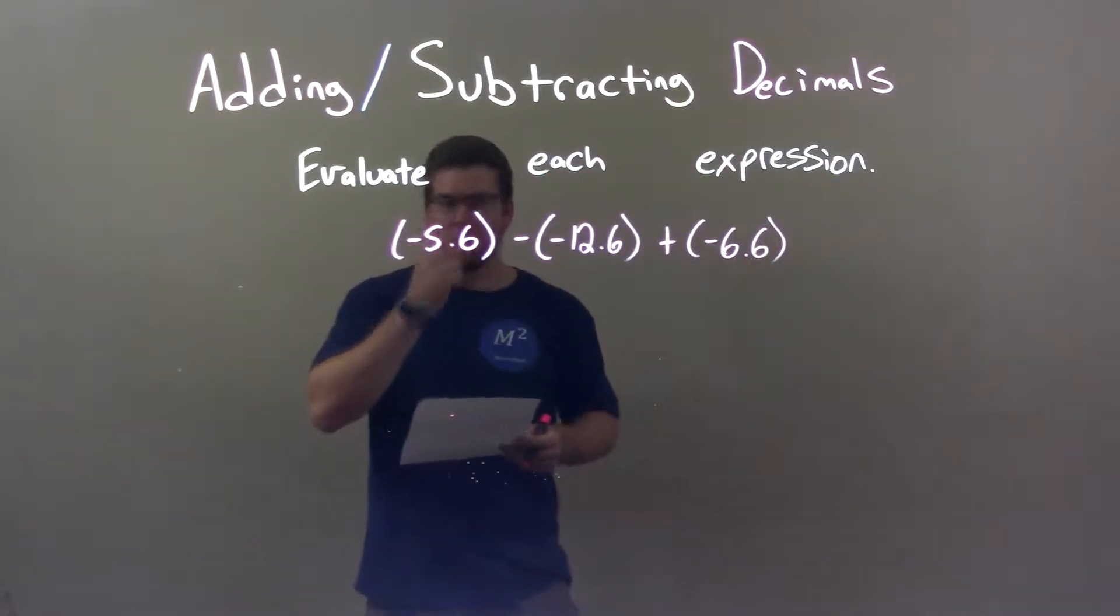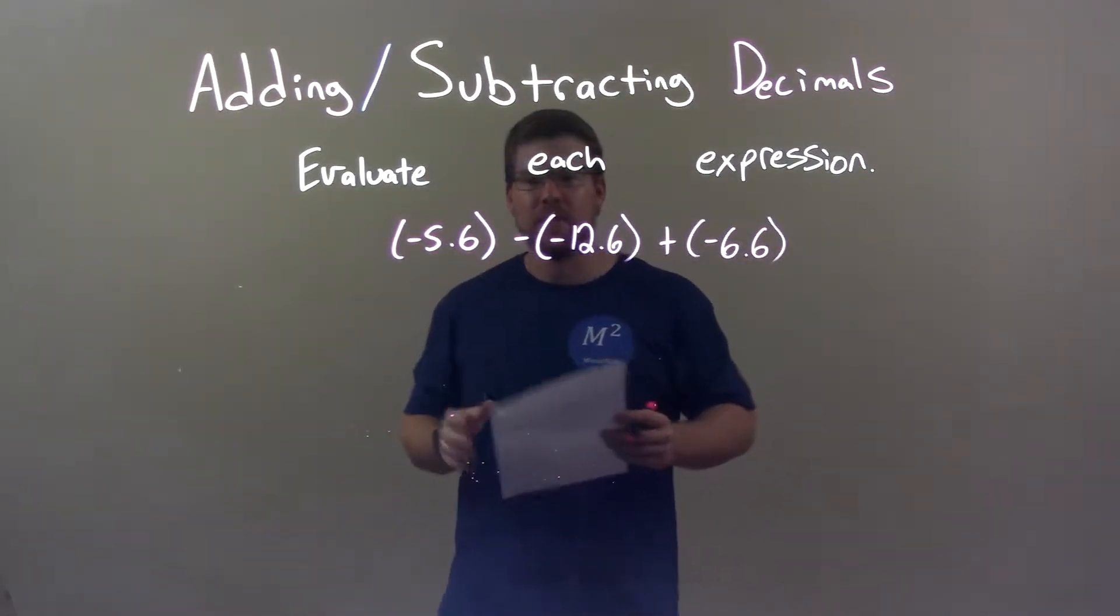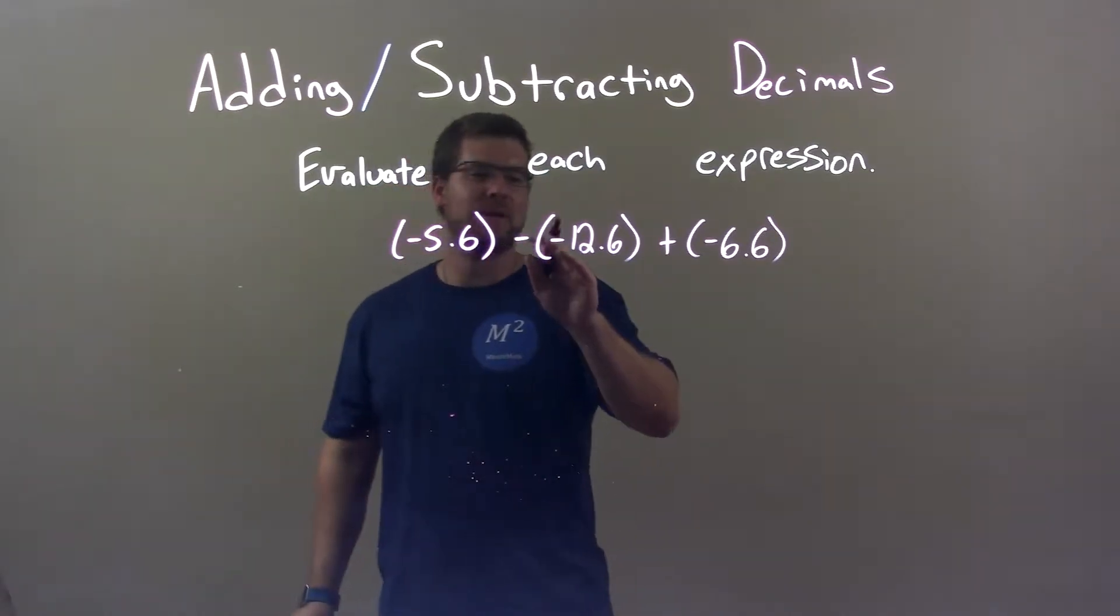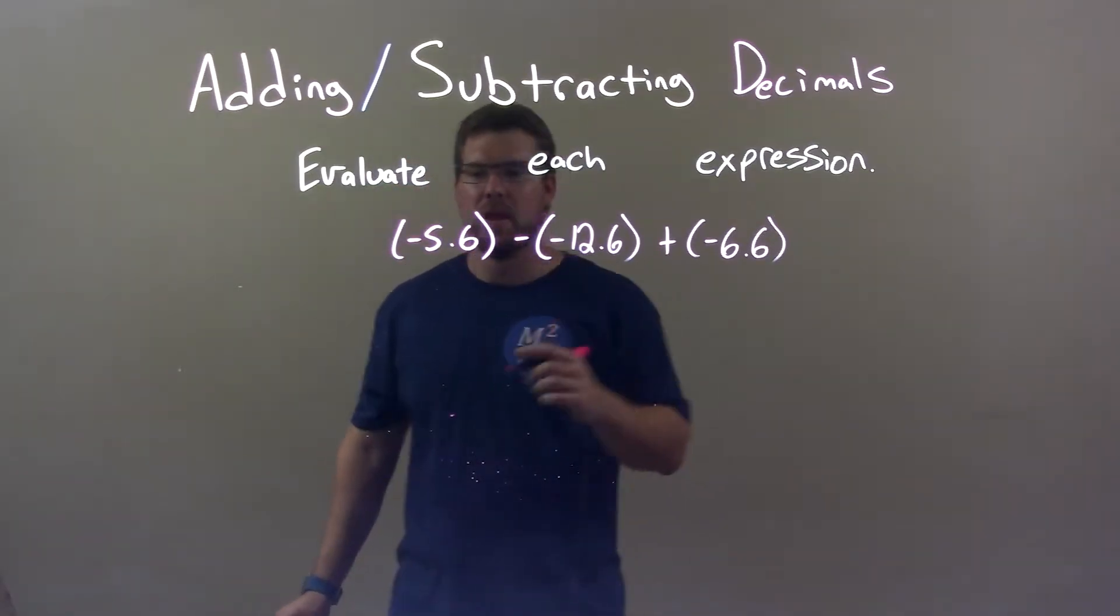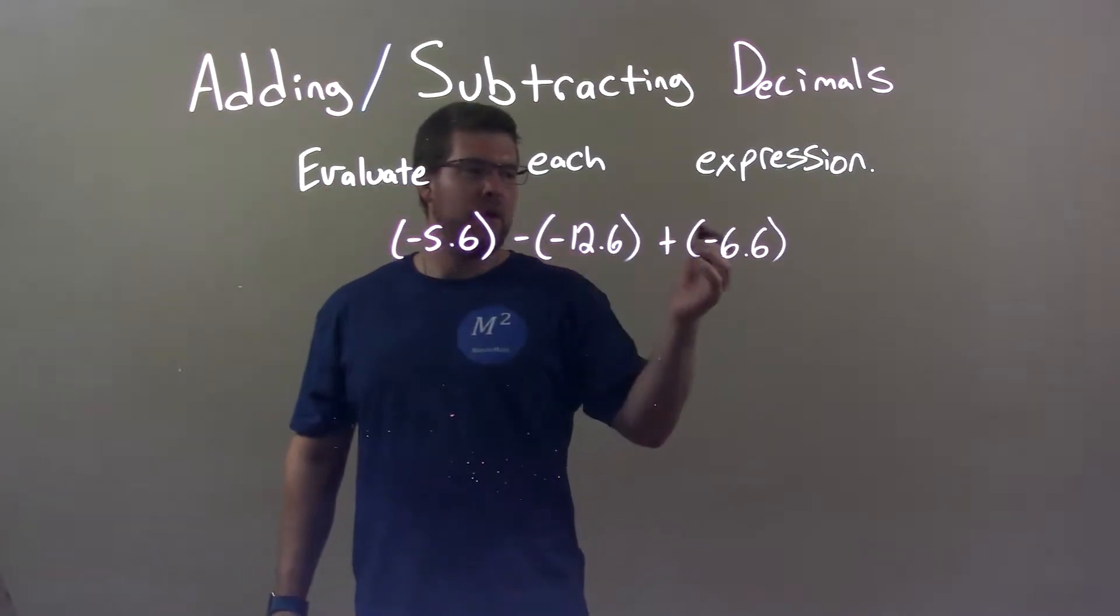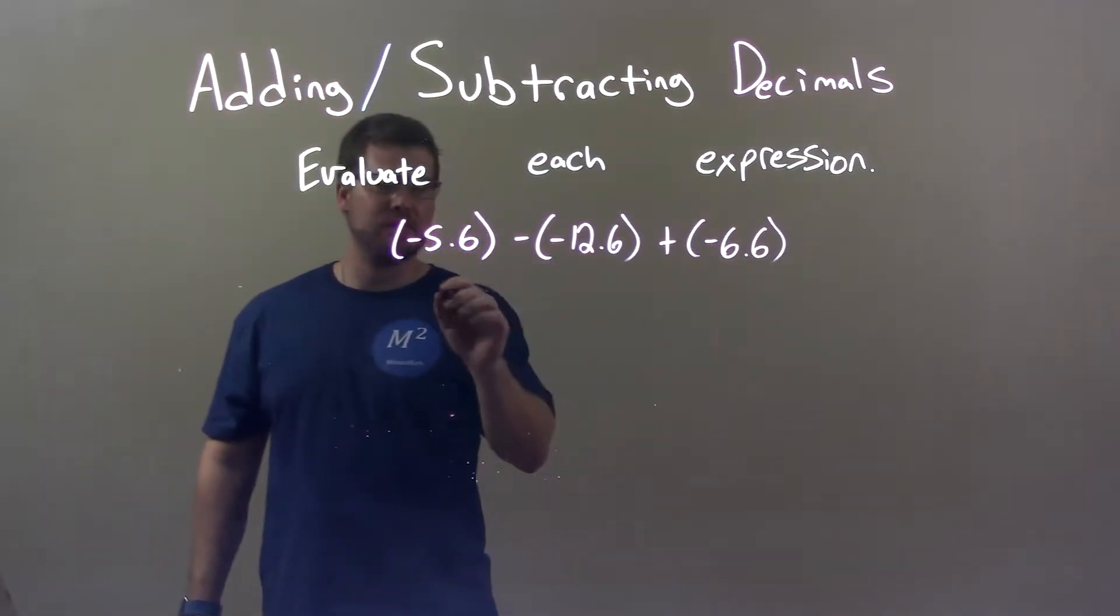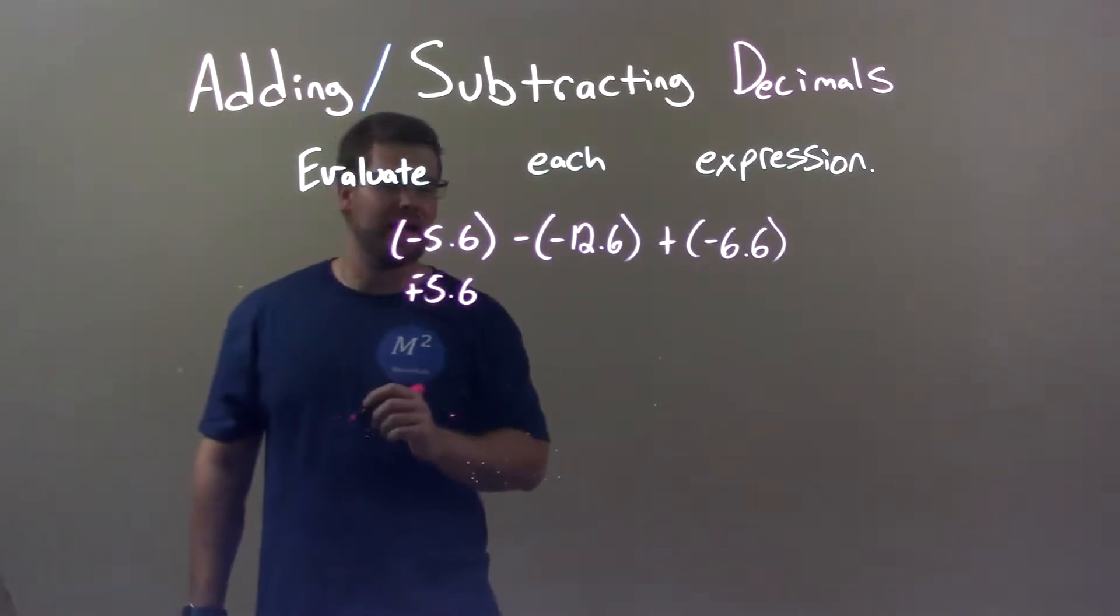Alright, well first thing, I'm going to kind of do two steps here. I know subtraction is the same thing as adding a positive, right? So I'm going to kind of do that there, but I'm also going to rearrange this. So let's just bring down the negative 5.6, okay? And I'm going to write that, you'll see in the future, as plus a negative 5.6.